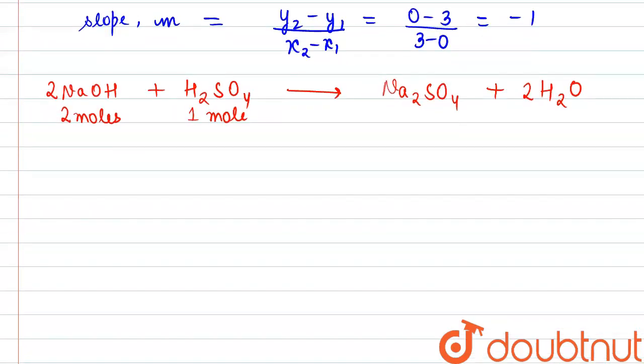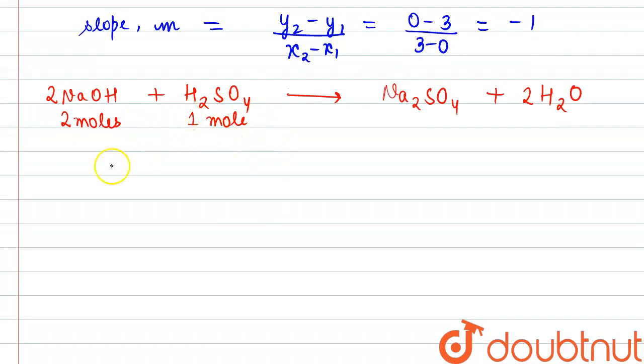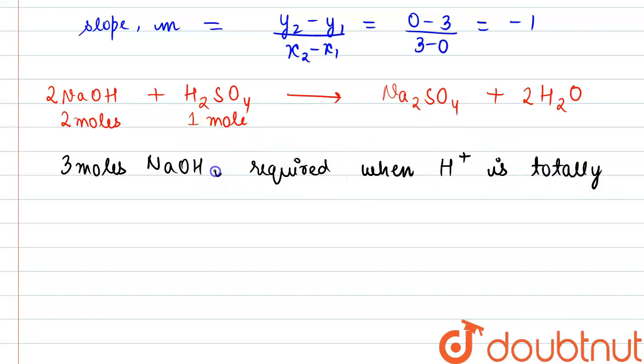We can say that 3 moles NaOH is required, then H+ ion is totally consumed. This point is clear to us now.